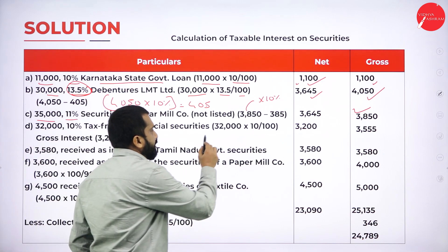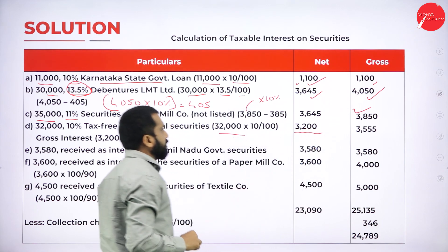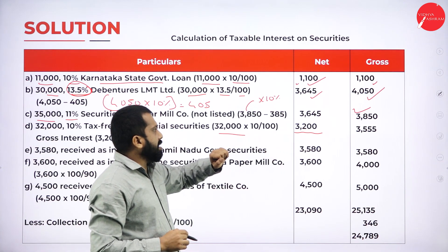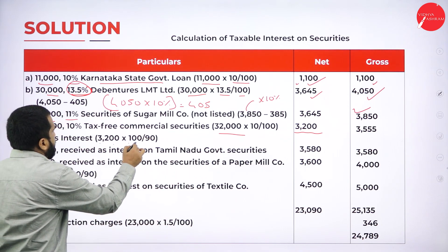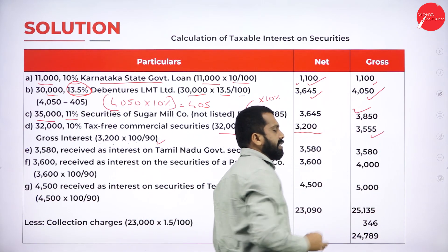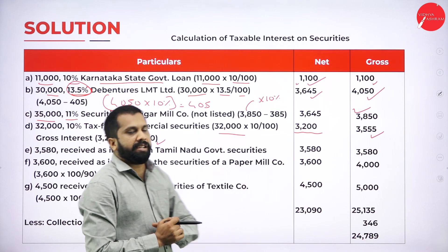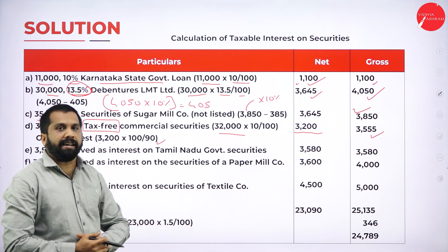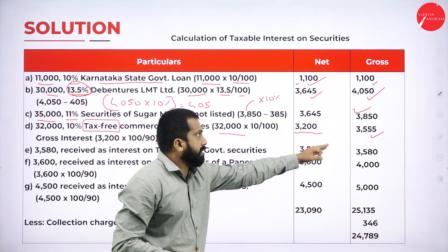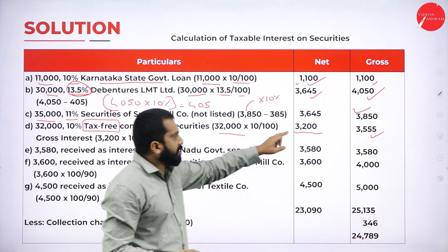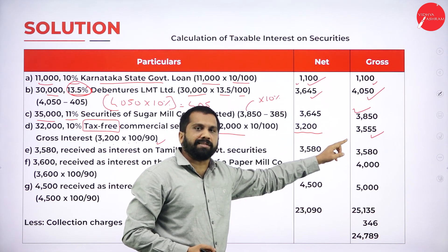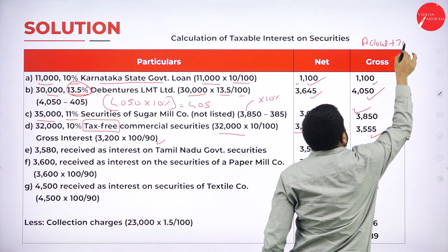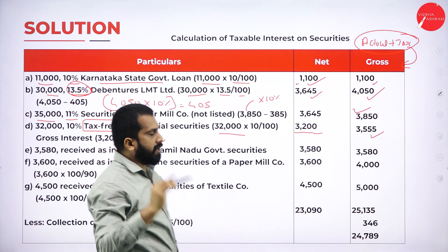Next: rupees 32,000 at 10% tax-free commercial security. 32,000 × 10% = 3,200. But because it is tax-free, the 3,200 is already your net answer. To get the gross, we do the reverse: 3,200 × 100/90 = 3,555. This is the gross. Tax-free means whatever you calculate is your net. If it is not tax-free, whatever you calculate is your gross. But for tax-free, you add back the tax to get gross: actual plus tax = gross.